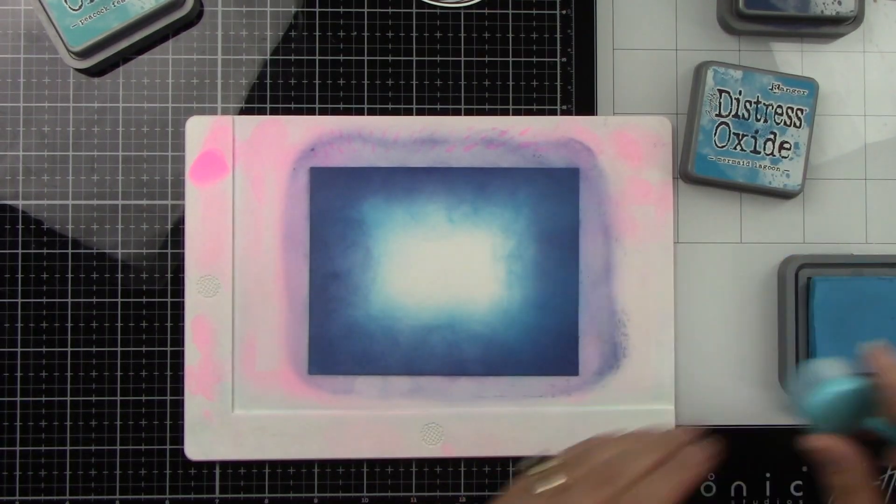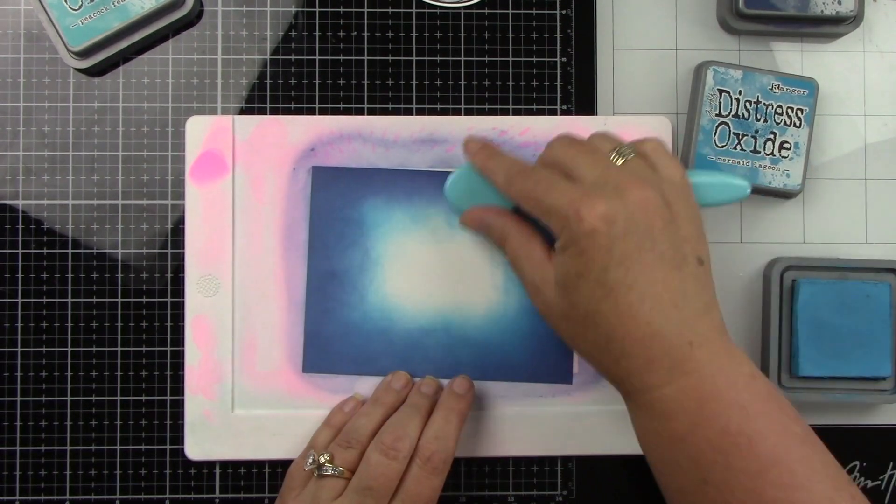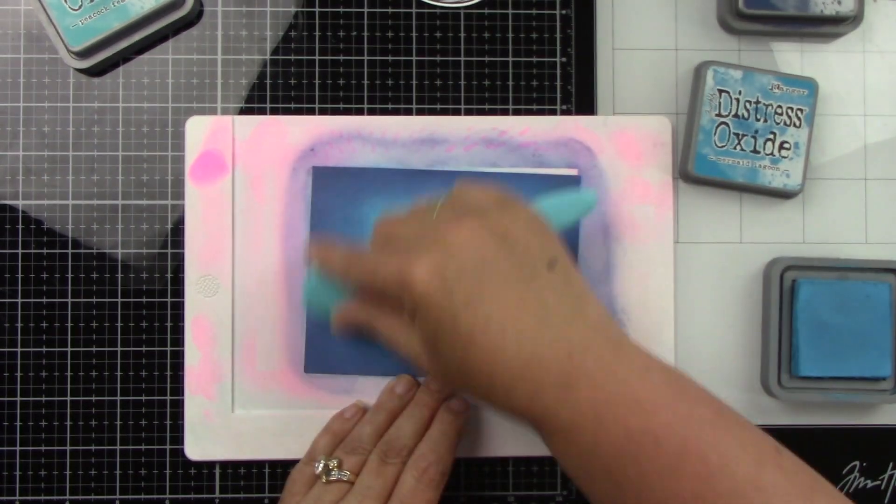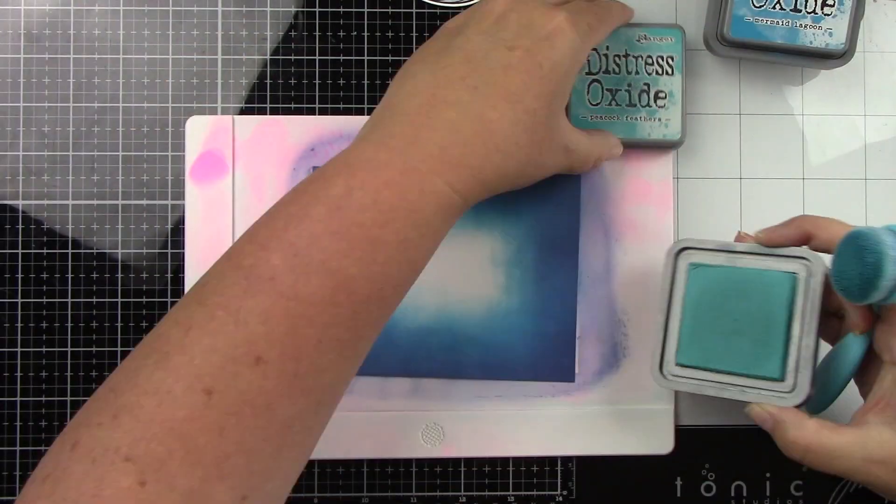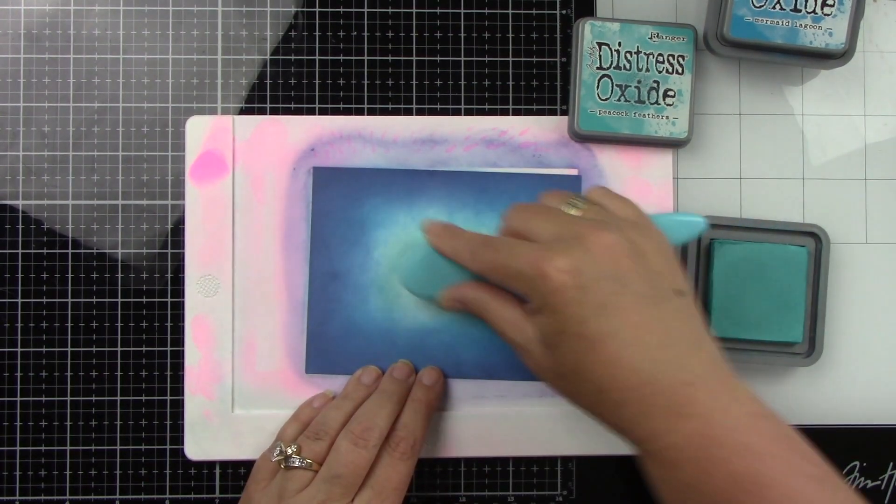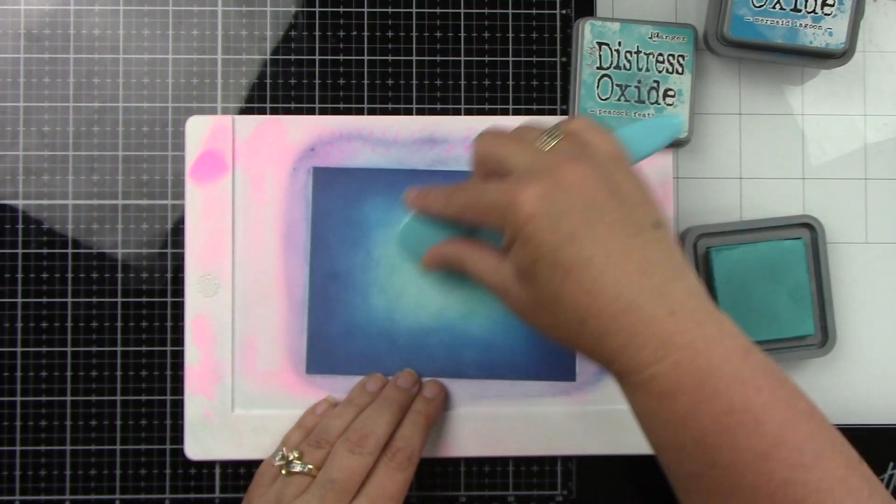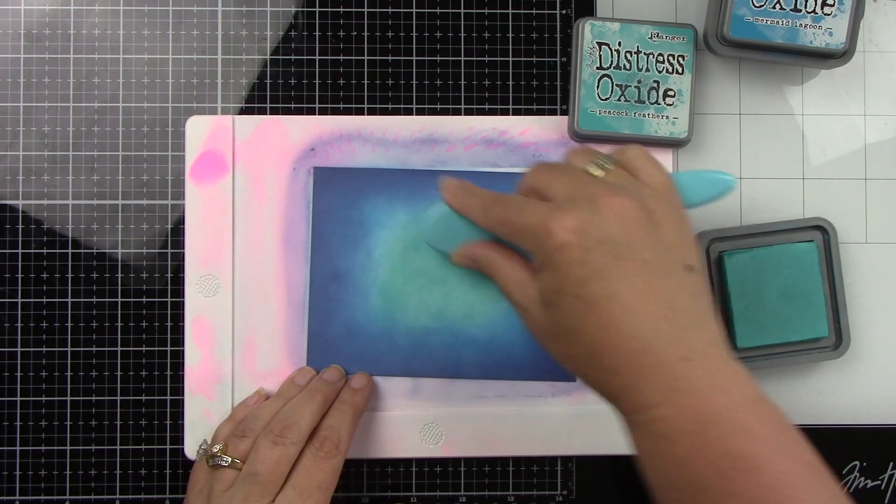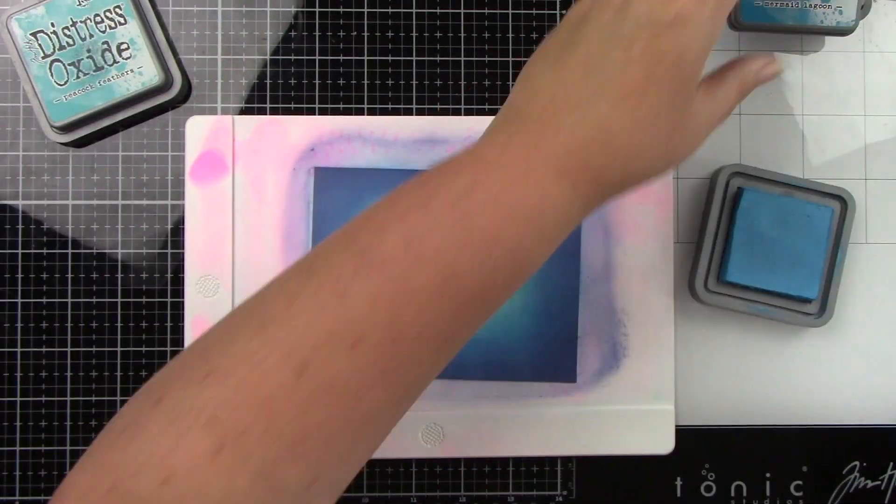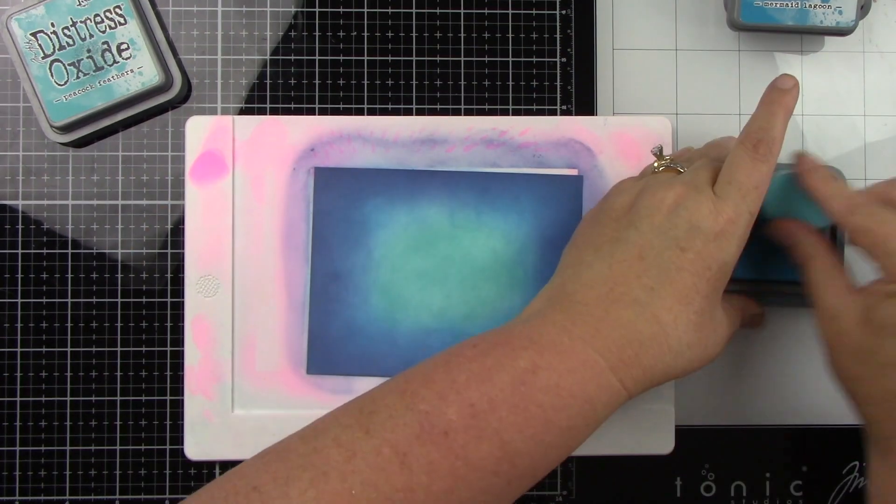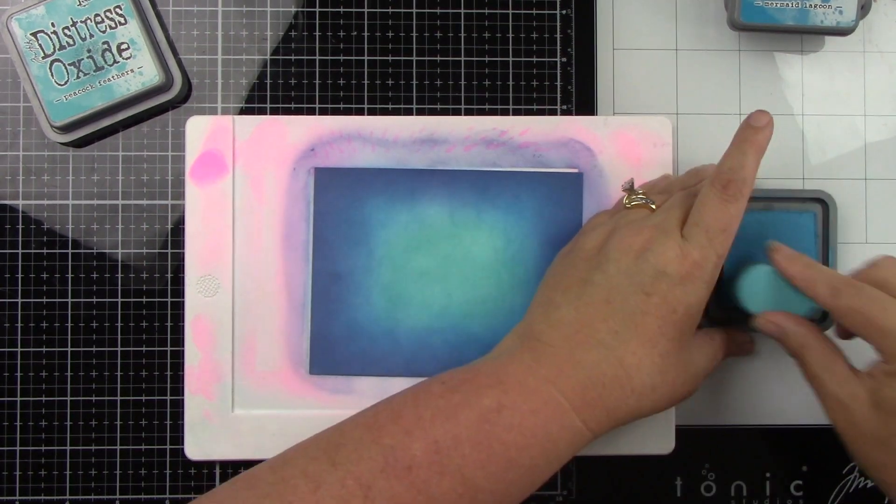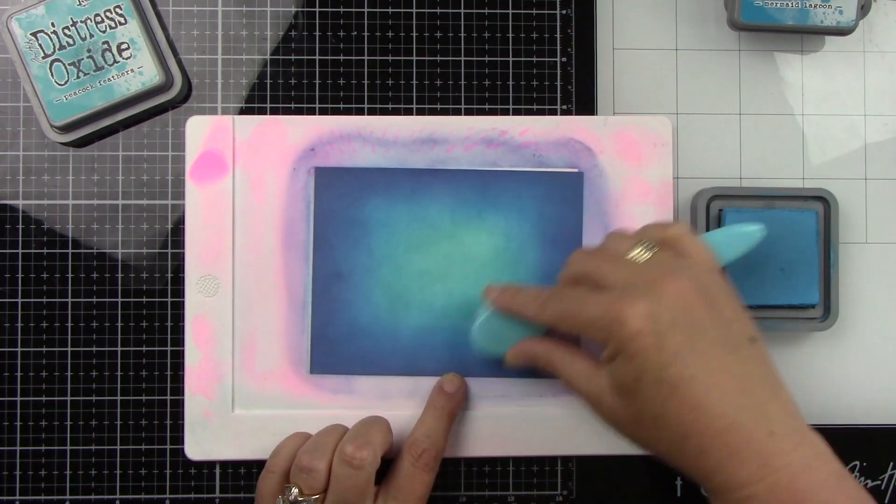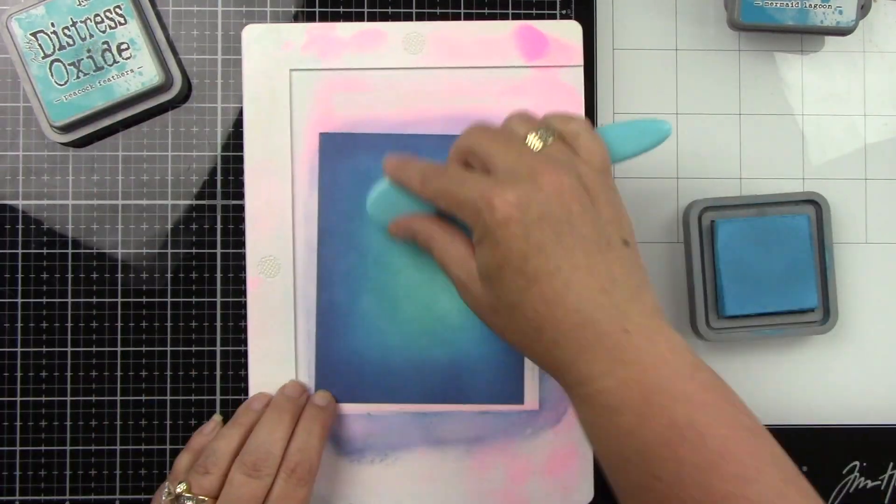My pads are a little bit dry and I just was feeling a little too lazy to go and re-ink them which is what I should have done. This would have gone a little bit faster but I'm just going over the colors to really try to get a really good blend. I did at the end get a really nice blend. So it was Chipped Sapphire, Mermaid Lagoon, and then Peacock Feathers here in the center.